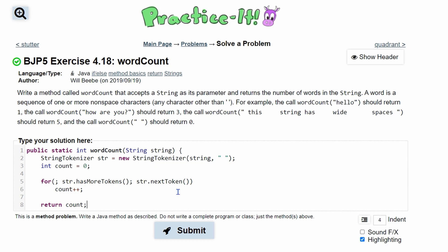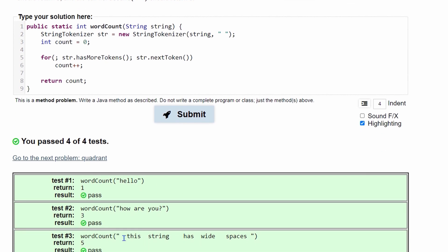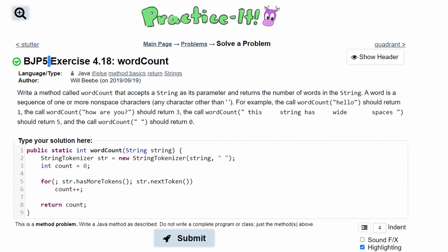When we're done with this for loop, we're going to return our count and end our method. So it's very simple. We'll run it, and we've passed all four tests. That's the code for Exercise 4.18: wordCount and how to use the StringTokenizer class.